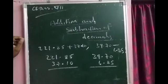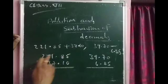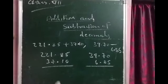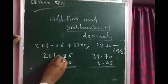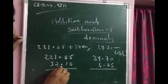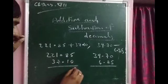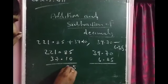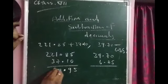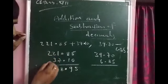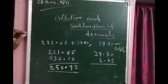Addition and subtraction of decimals. Example: 221.85 plus 37.10. Addition proceeds from right to left: 5 plus 0 is 5; 8 plus 1 is 9; keep the decimal point; 7 plus 1 is 8; 2 plus 3 is 5; there is no number in the hundreds place of 37.10, so keep 0; 2 plus 0 is 2. The answer is 258.95.